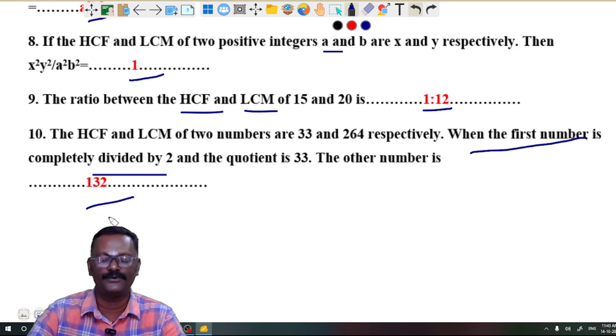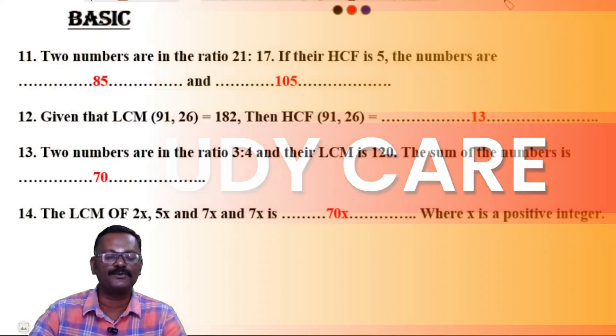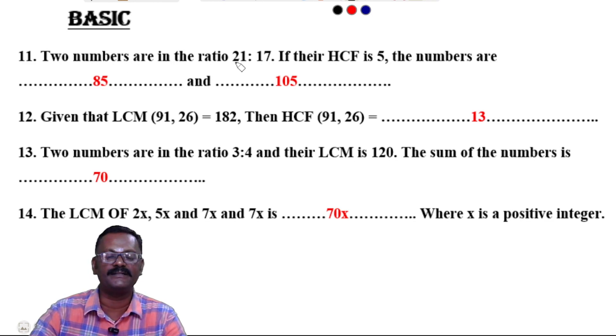Question 11: Two numbers are in the ratio 21:17. If their HCF is 5, the numbers are 85 and 105.